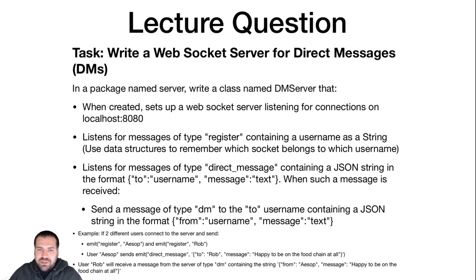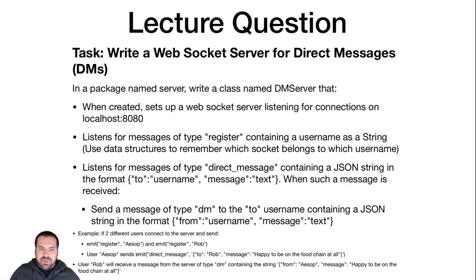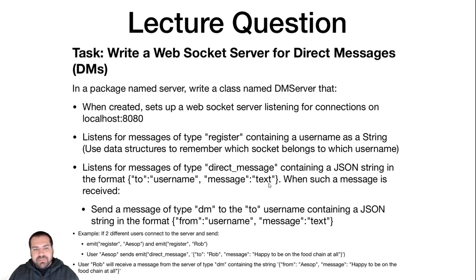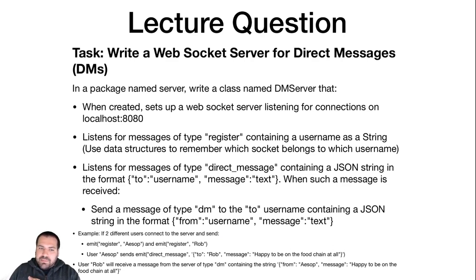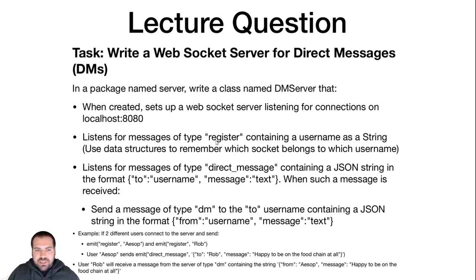The lecture question for today: we're going to see a chat app in lecture and the code is in the repo. Your task for the lecture question is to build a DM app - a WebSocket server that listens for direct messages between users. Users will register their username, then instead of sending chat messages they'll send direct messages to a specific user as a JSON string, sending the username they want to send to and the message. Your server has to send a message of type 'dm' to the specified user. A lot of this is tracking data structures - when somebody registers, you have to link that username to that WebSocket.